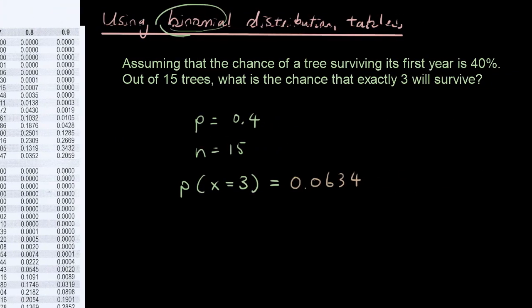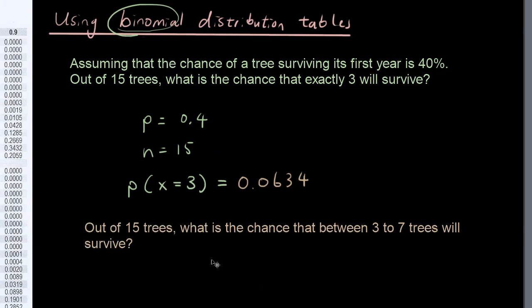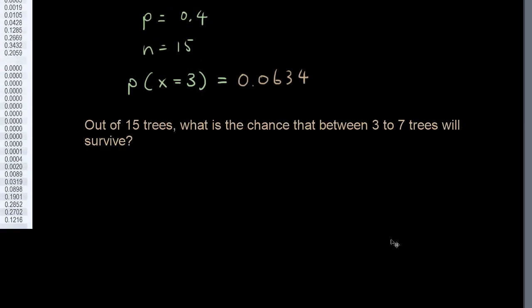So why would you use a table versus typing it into the calculator? Very simple. If I give you a harder question. So in this question it says out of 15 trees, what is the chance that between 3 to 7 trees will survive?